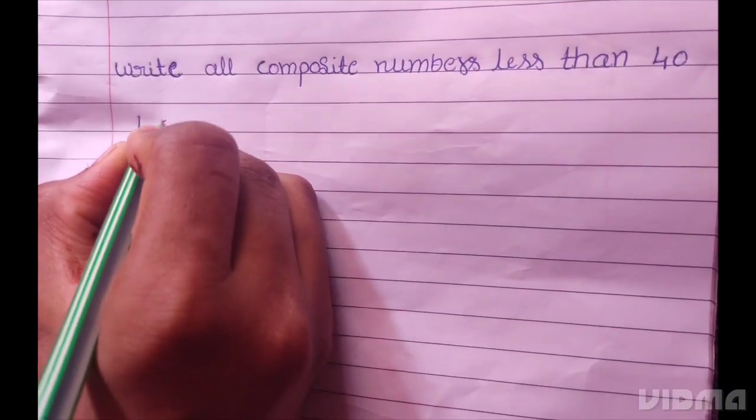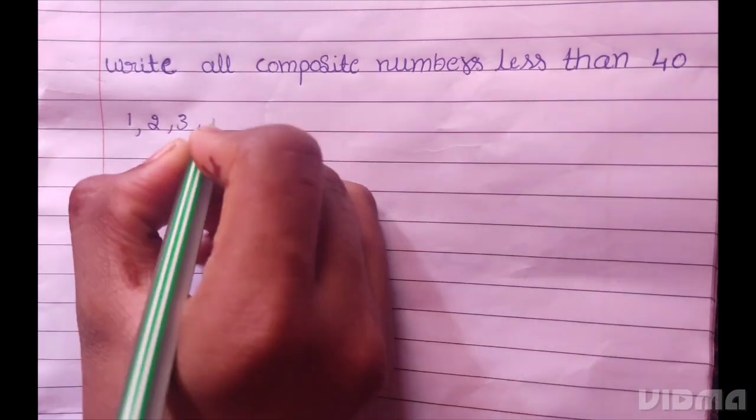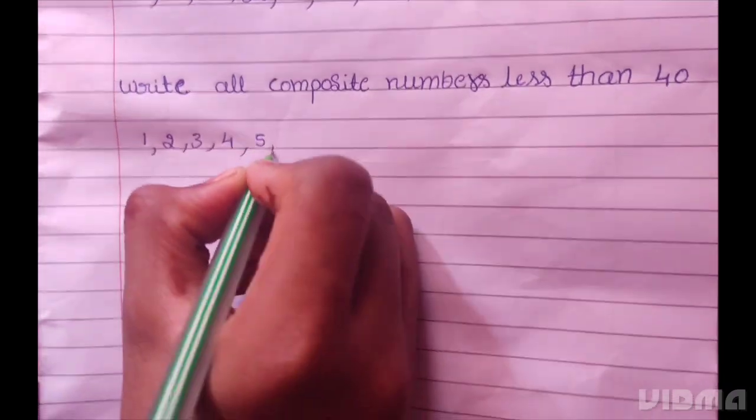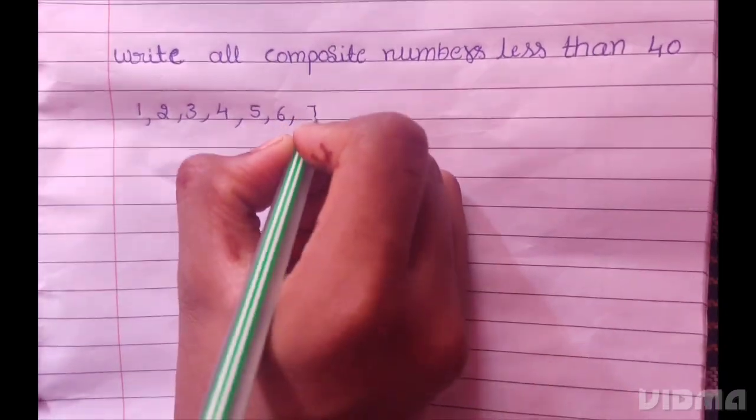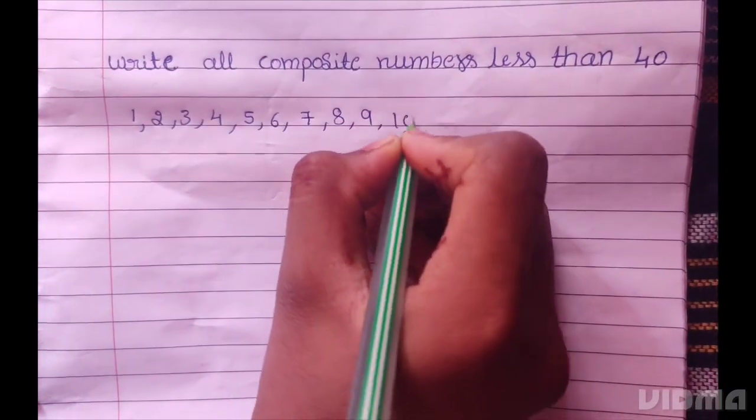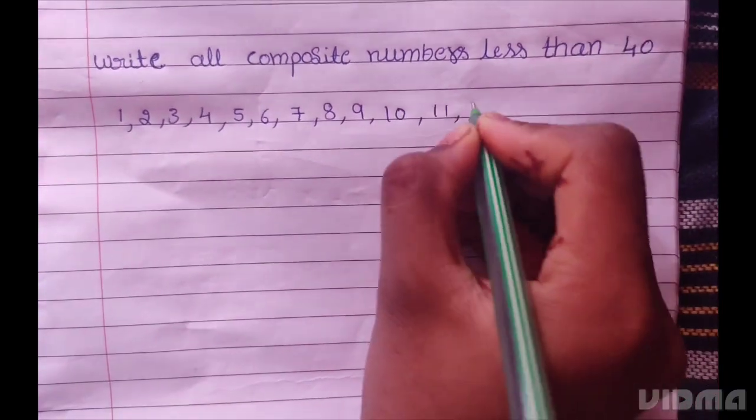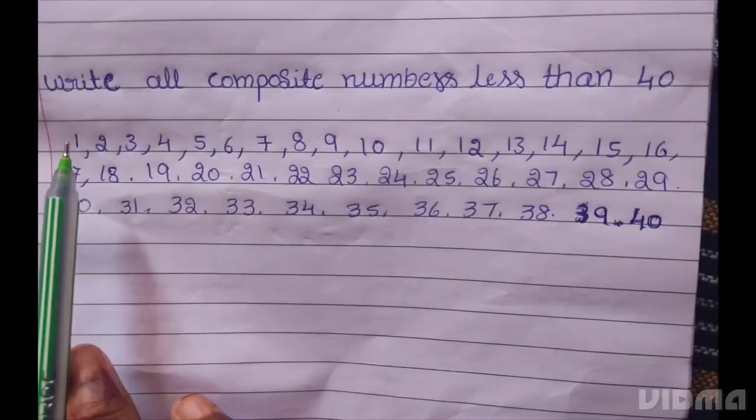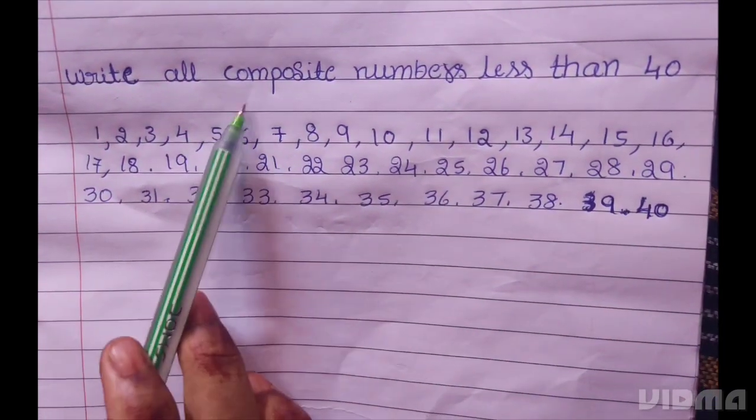1, 2, 3, 4, 5, 6, 7, 8, 9, 10, 11, 12, 13. Now we have to find composite numbers.